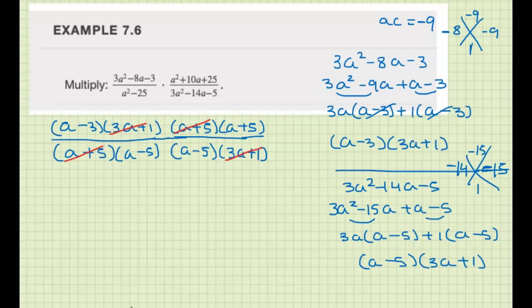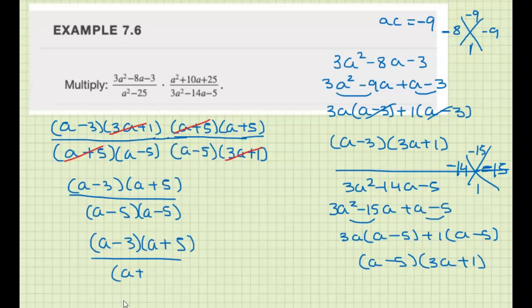So what's left over? On the top, a minus 3 and a plus 5. And on the bottom, a minus 5 and a minus 5. I can write it as a minus 3 times a plus 5 over a minus 5 squared.